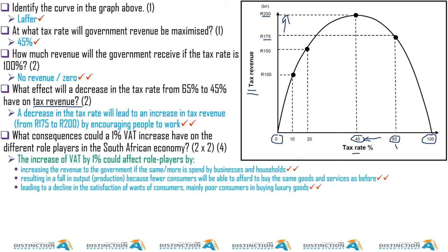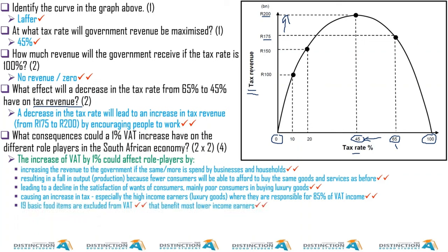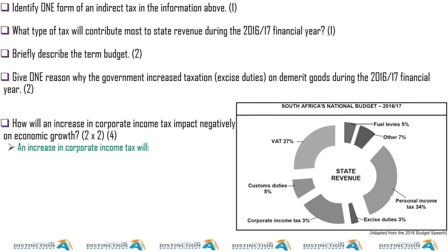Luxury goods become way too expensive. They were expensive before, but now with extra VAT, they'll be less attractive. High income earners are responsible for 85% of that income. Nineteen basic food items are excluded from VAT, which benefits lower income earners more, leading to a decrease in sales that will reduce profits.